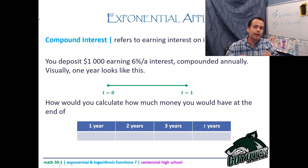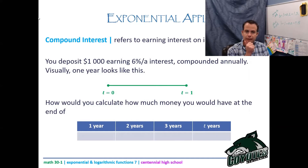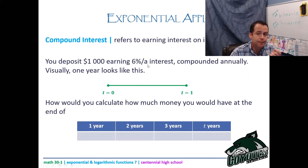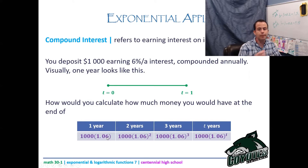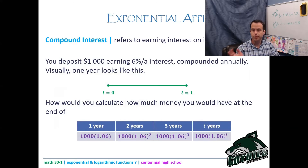Example: you deposit $1,000 earning 6% per annum (per year), compounded annually. At the end of one year you'd have 1000 × 1.06. Two years: 1000 × 1.06². Three years: 1000 × 1.06³. So for t years: 1000 × 1.06^t. That's 1.06 because you need to grow — you're above 100%.